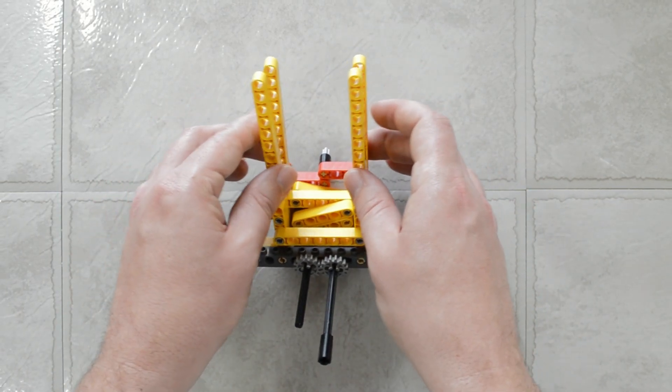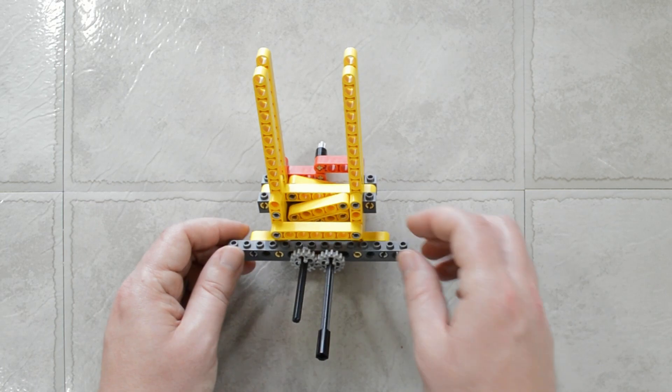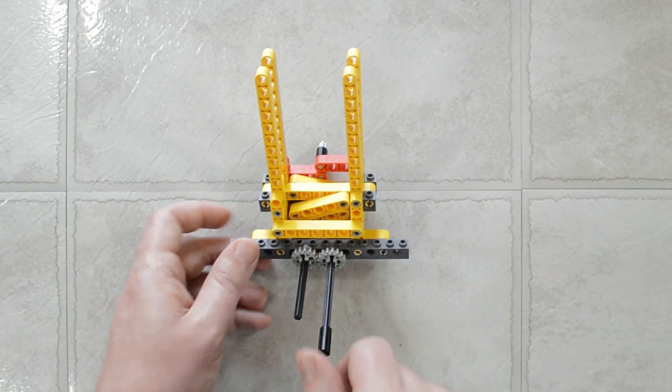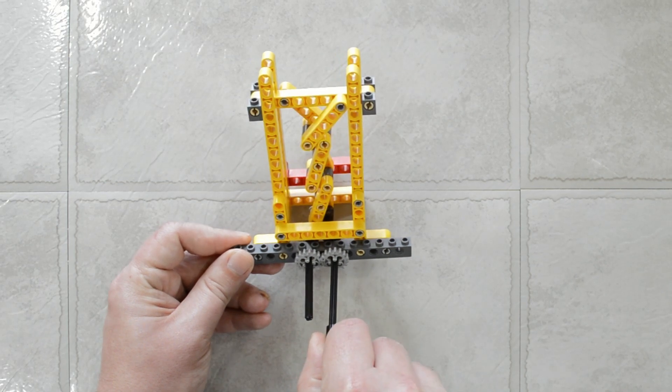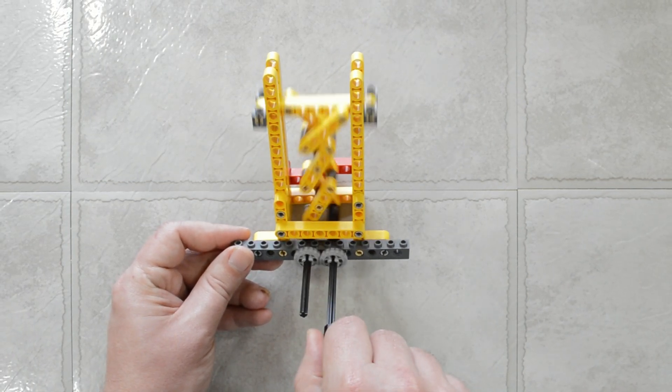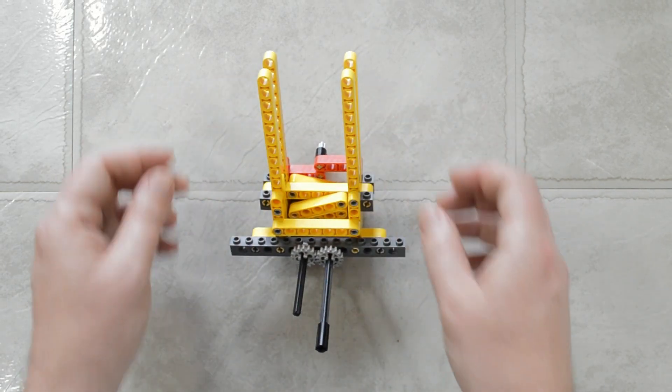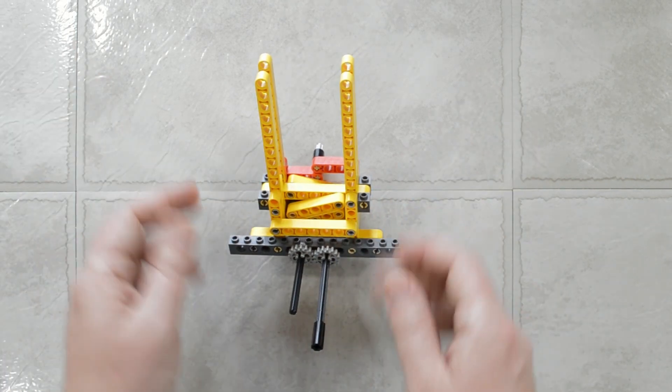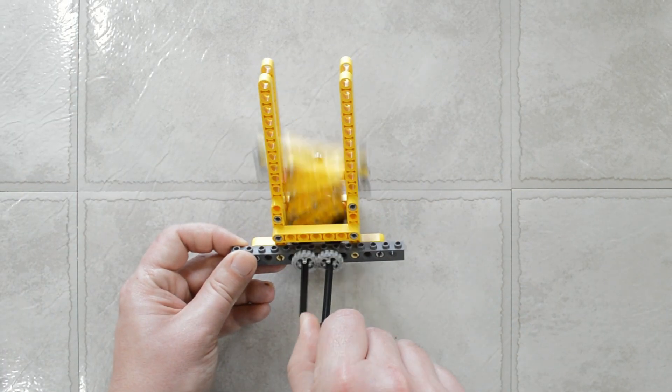And while this construction is really wobbly—I just put it together with frictionless pins because I knew I'd be tearing it apart again—it works perfectly for keeping that load level. If I made these beams much more firm, then there wouldn't be any give at all and it would be lifting up and down in perfect unison.